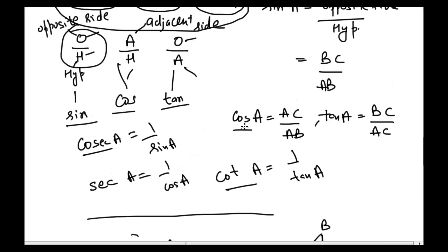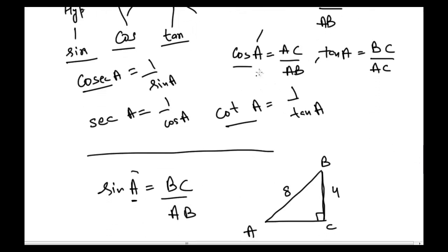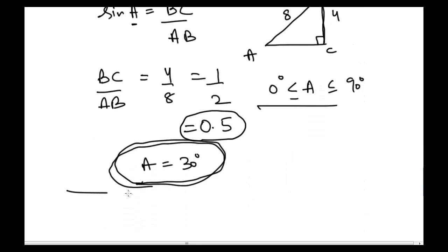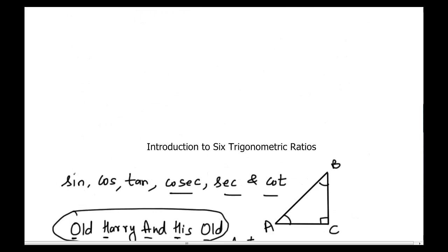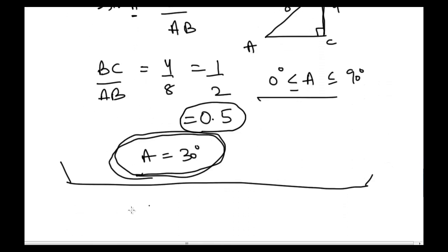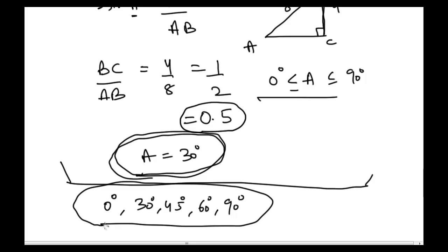The same principle applies to all six trigonometric ratios. For cosine A, for one particular value of AC to AB, the value of angle A is constant — you cannot have different angles giving the same ratio. In the next video, I'll explain how to memorize the values of all six trigonometric ratios for the standard angles: 0°, 30°, 45°, 60°, and 90°, as these are used most often. See you then!